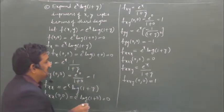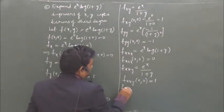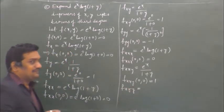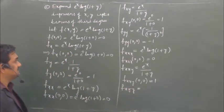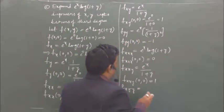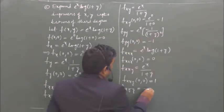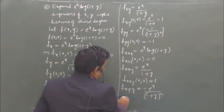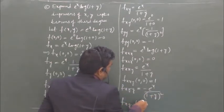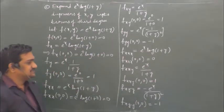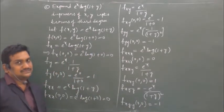Now fxyy is the derivative of fyy with respect to x. fyy = -e^x/(1+y)², so its derivative with respect to x is -e^x/(1+y)². Now fxyy at (0,0) with x=0, y=0 is -1.